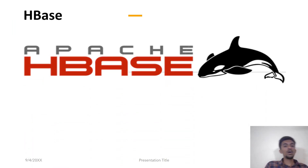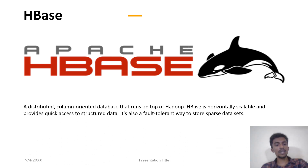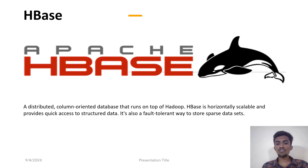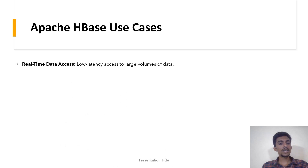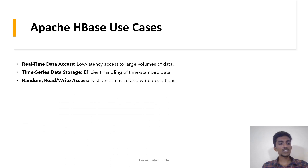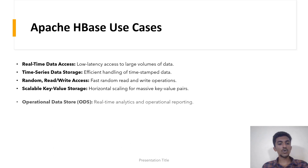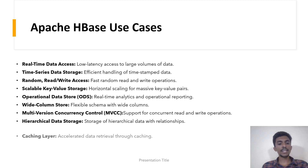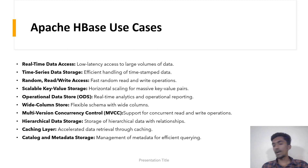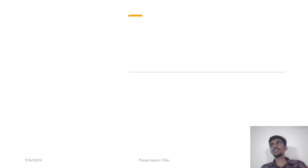HBase is one more component in the Hadoop ecosystem. It's a distributed, column-oriented database that runs on top of HDFS. HBase is horizontally scalable and provides quick access to structured data. It's also a fault-tolerant way to store sparse data sets. Apache HBase use cases include: real-time data access, time series data storage, random read/write access, scalable key-value storage, operational data store, wide column store, multi-version concurrency control, hierarchical data storage, caching layer, and catalog and metadata storage.